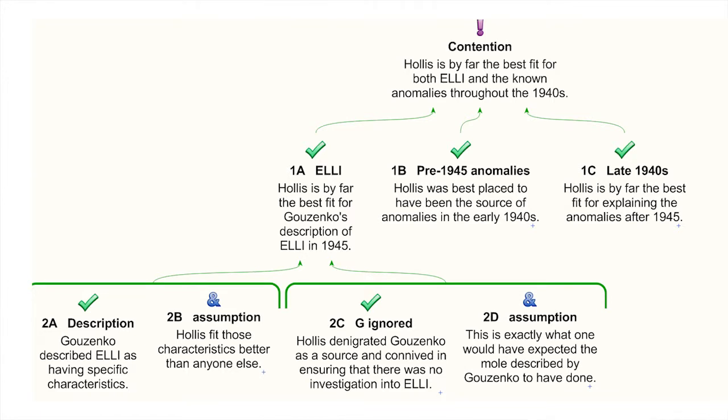The second thing to consider is that Hollis denigrated Guzenko as a defector and as a source, and connived in ensuring that there would be no serious investigation within MI5 into Guzenko's claims — no hunt for Elli. It's significant that at that same time, Moscow Centre fully expected that there would be a very serious mole hunt for Elli and took pre-emptive steps to protect their assets against such an investigation. But rather to their surprise, there wasn't one — there never really was, at least not until the 1960s, well and truly after the event. This is exactly what one would have expected if Hollis was the mole.